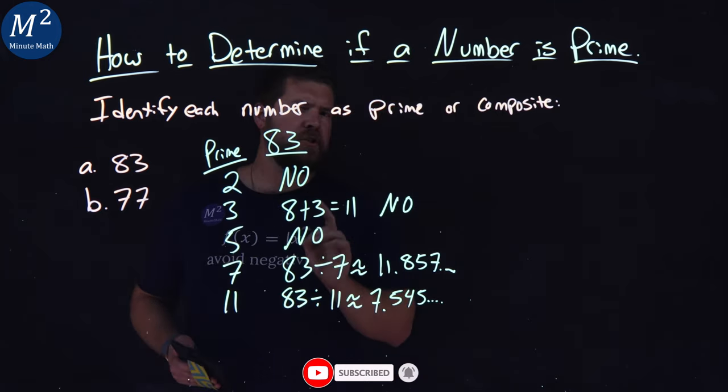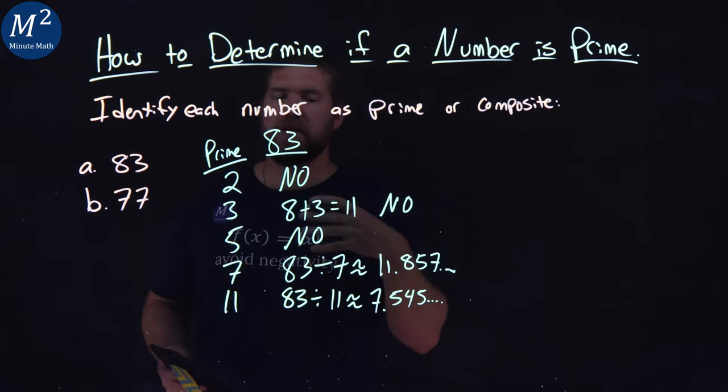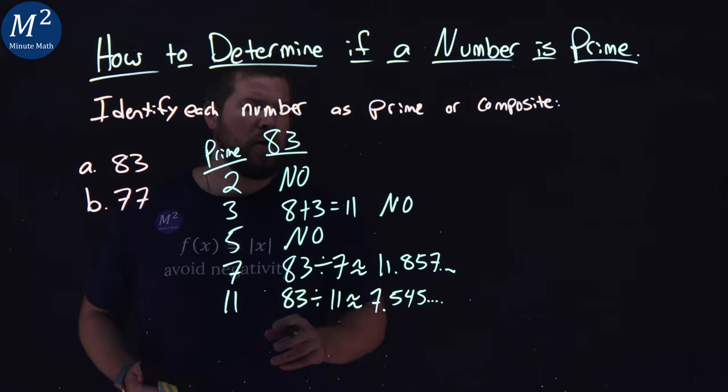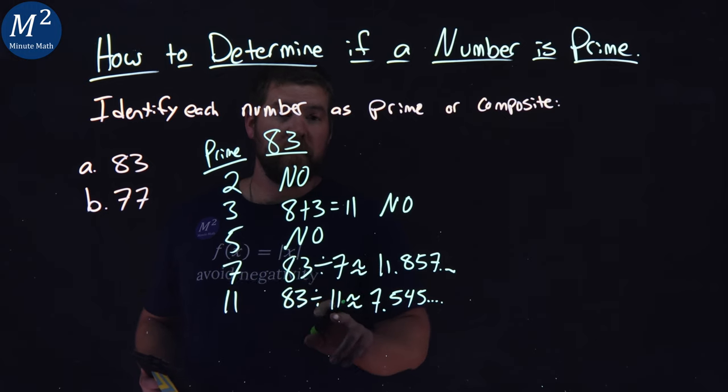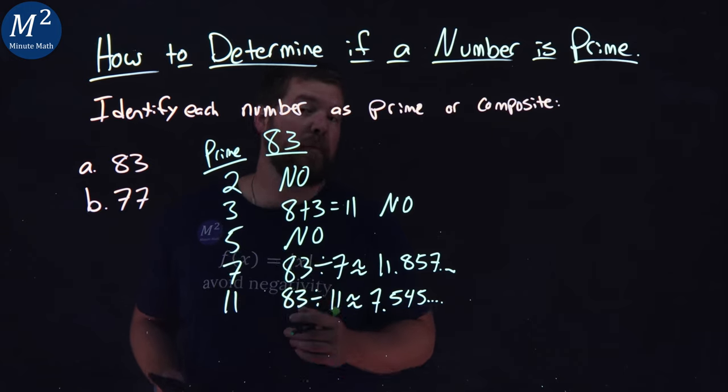And we're actually done checking prime numbers. Sometimes students keep going and start checking 13, but what we notice here is we divided by 11, and this number is now smaller than the highest prime number that we've checked.